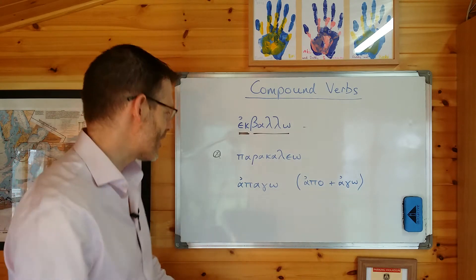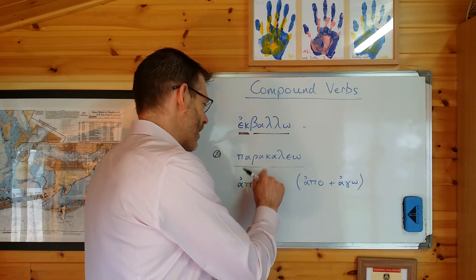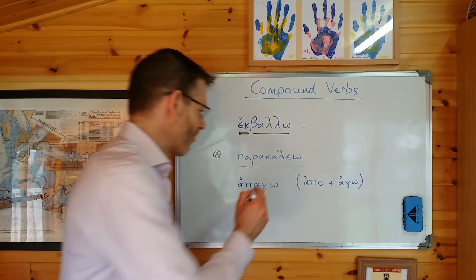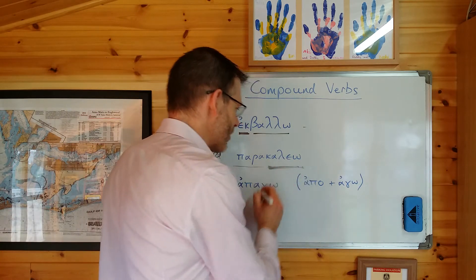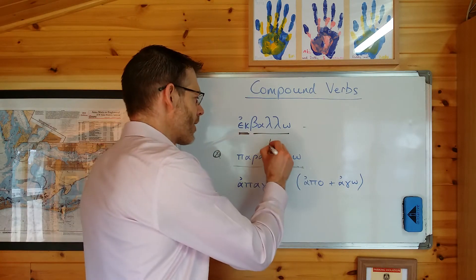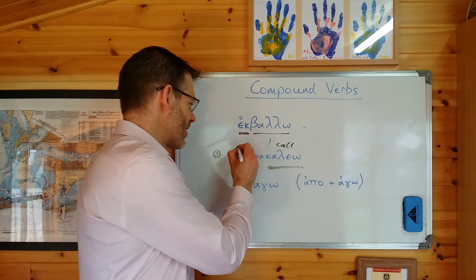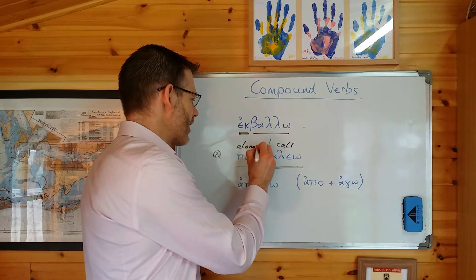And for an example of that, this word here, parakaleo. Now let's just look at the component parts. The verb is kaleo, which means I call. So let's stick that in here. I call. Para is a preposition meaning beside or alongside. So let's stick that here.